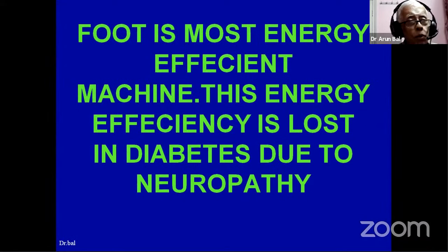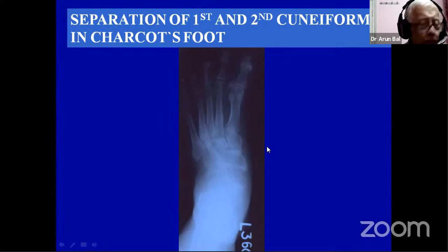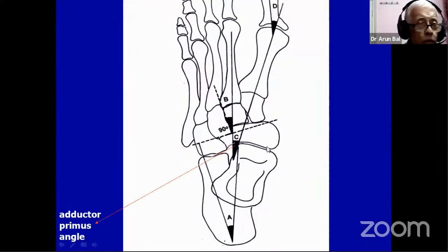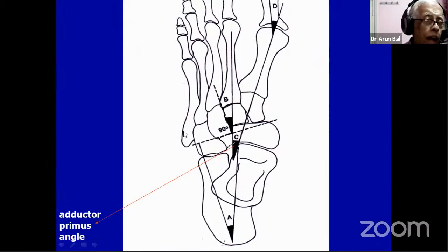The foot is the most energy-efficient machine. Normal scent — stance — doesn't get calluses and callosities. This energy efficiency is lost in diabetes due to neuropathy. If you take a simple AP X-ray once a year, you can see a gap between the first and second cuneiform — normally there is no gap anatomically. If this angle, normally three degrees, is widening, that is an early sign the foot is undergoing diastasis — the mid-foot is collapsing due to neuropathy.